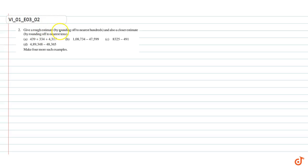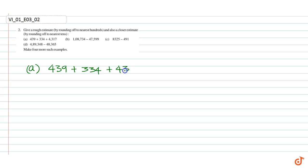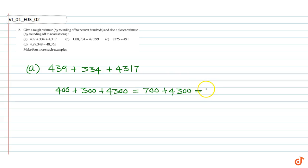In this question we have to give a rough estimate by rounding off to nearest hundreds, and also a closer estimate by rounding off to nearest tens. Part A: 439 plus 334 plus 4317. By rounding off to the nearest hundred we get 400 plus 300 plus 4300, which is equal to 700 plus 4300, which is equal to 5000.